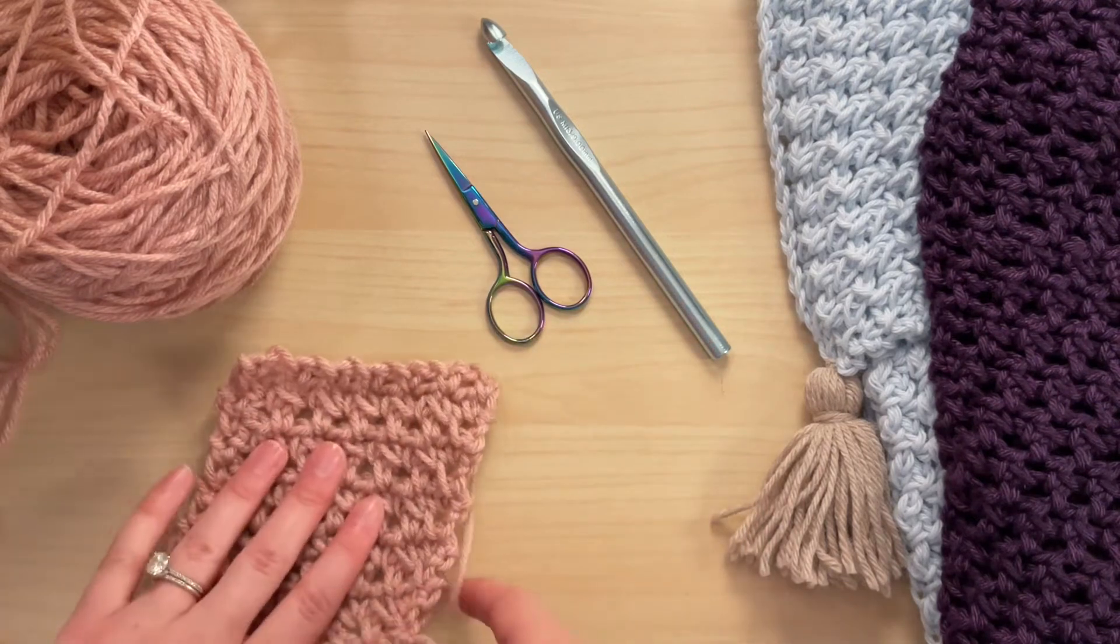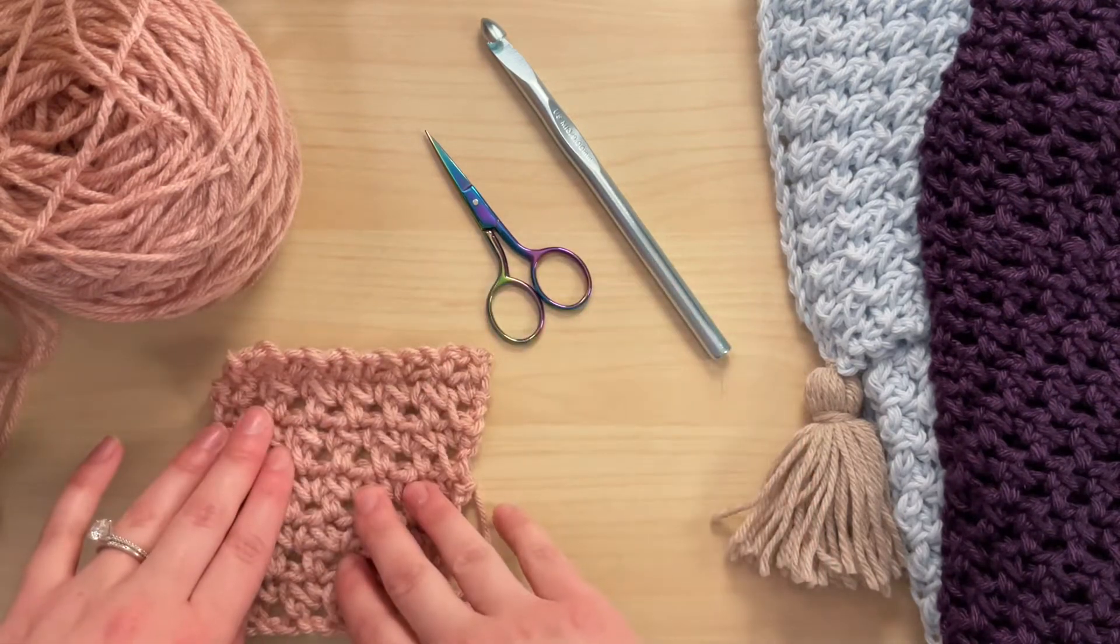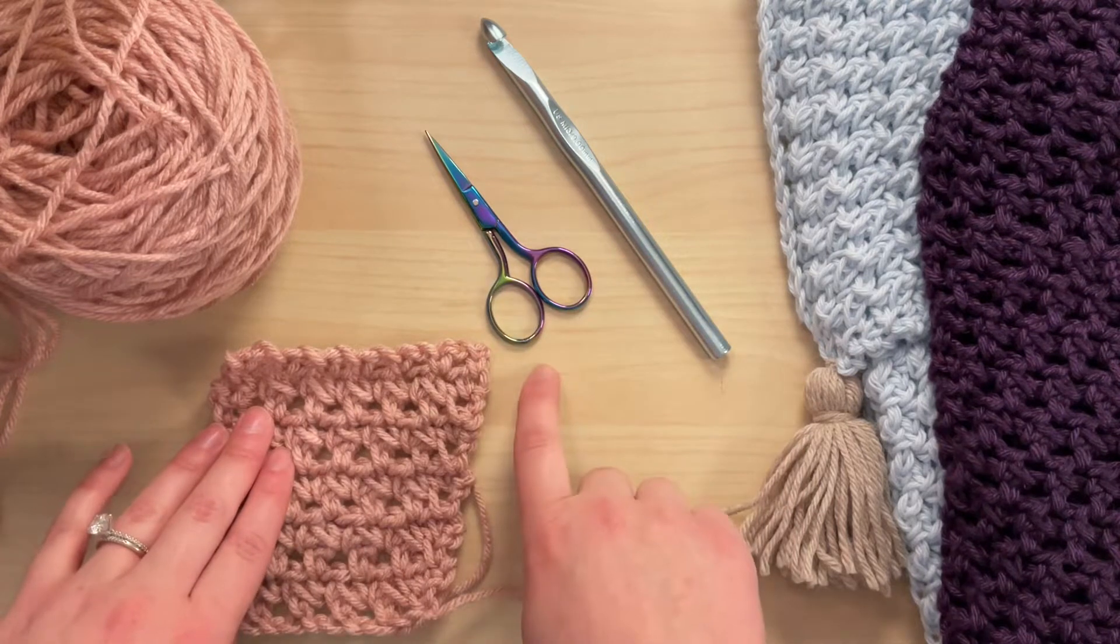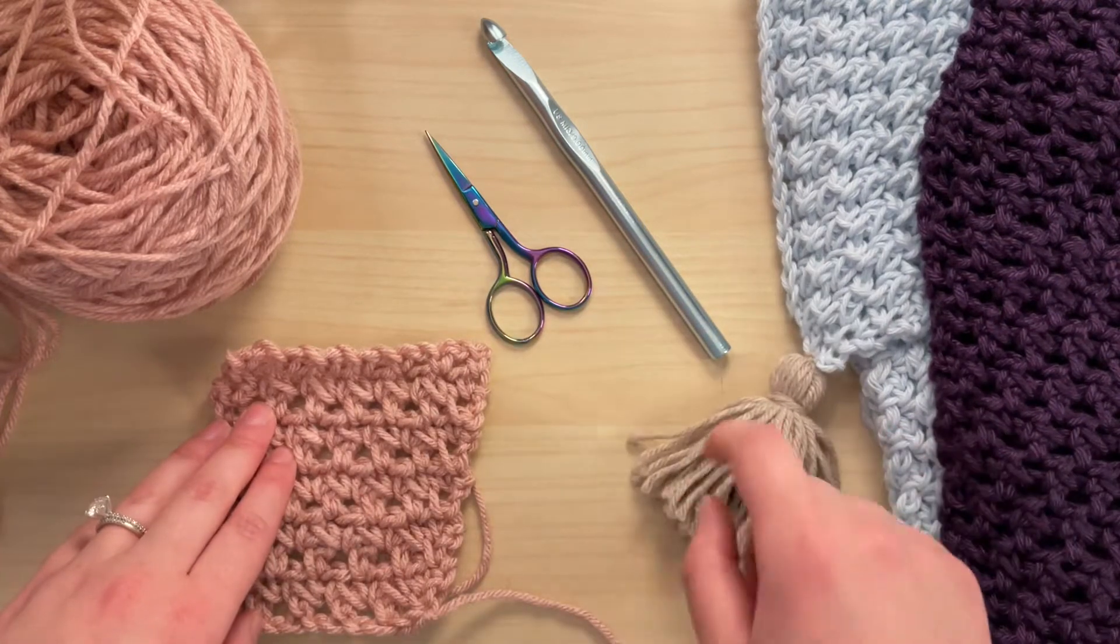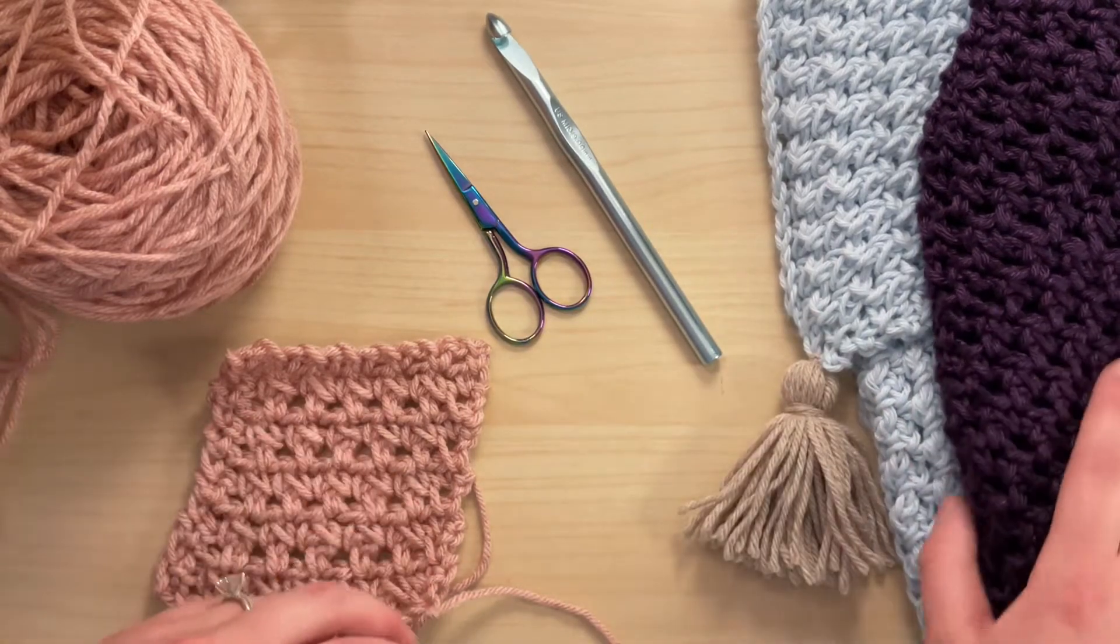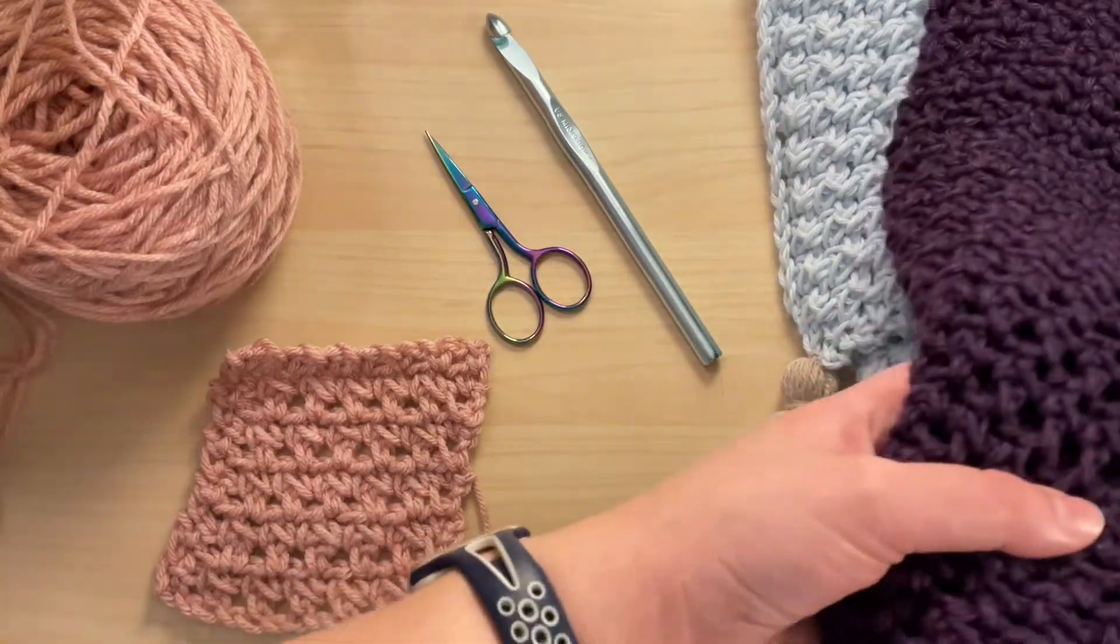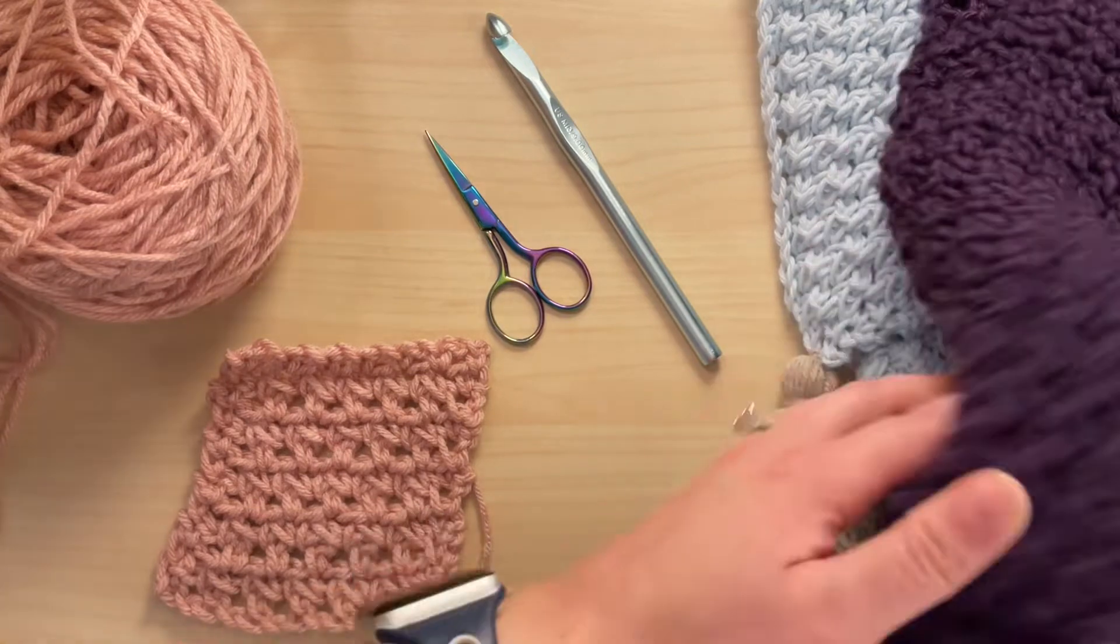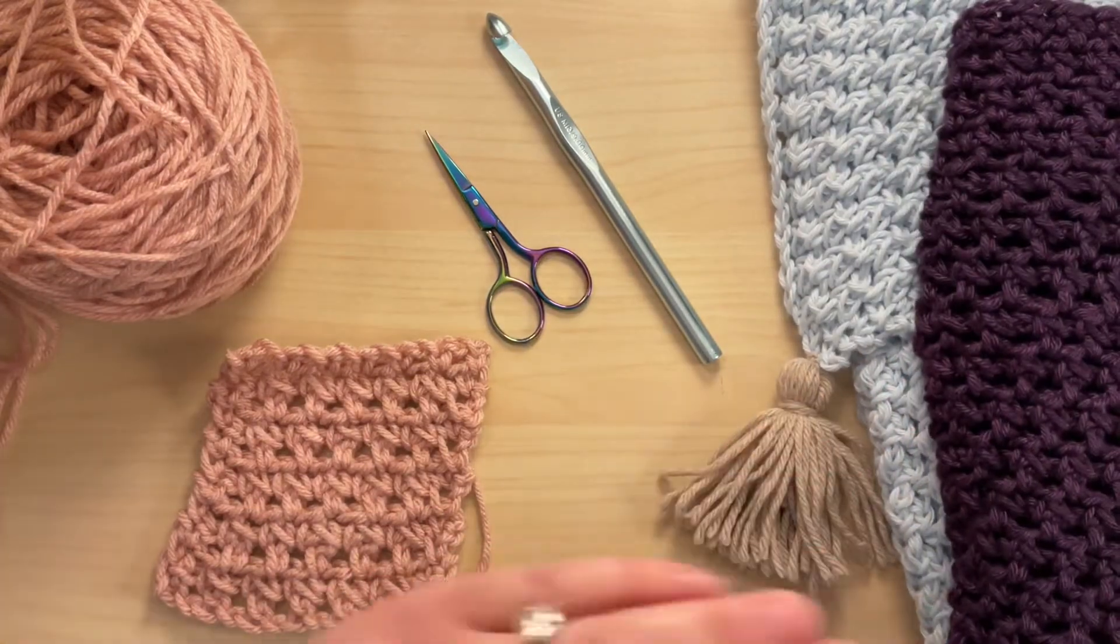For this stitch I used a 9 millimeter hook and worsted weight yarn, and you'll need both of those as well as some scissors, something to make tassels with, and if you prefer a row counter to make my Breezy Cluster Scarf. I love how it turns out, it's just super squishy and I had to make it in two colors because I love it so much.